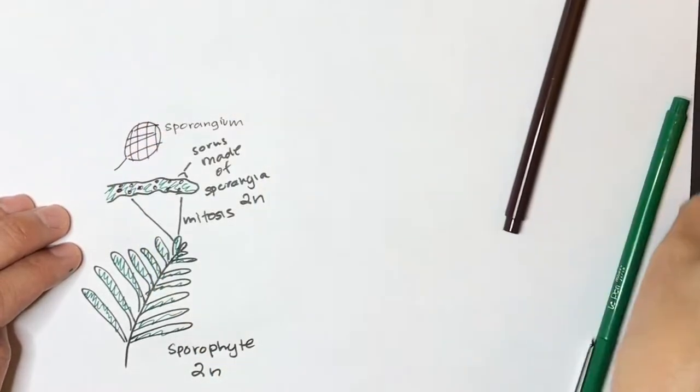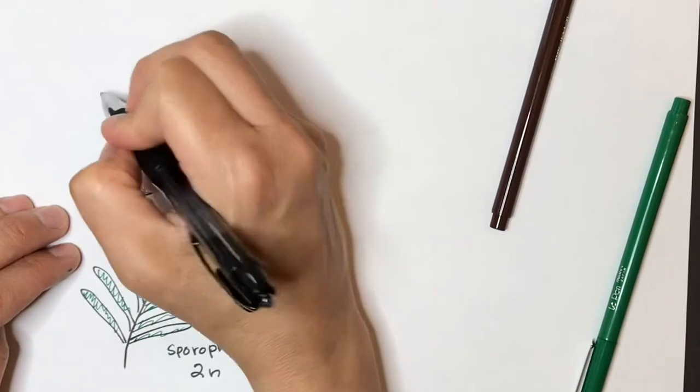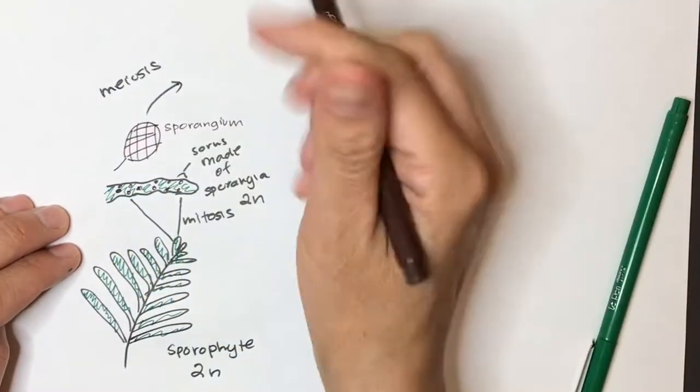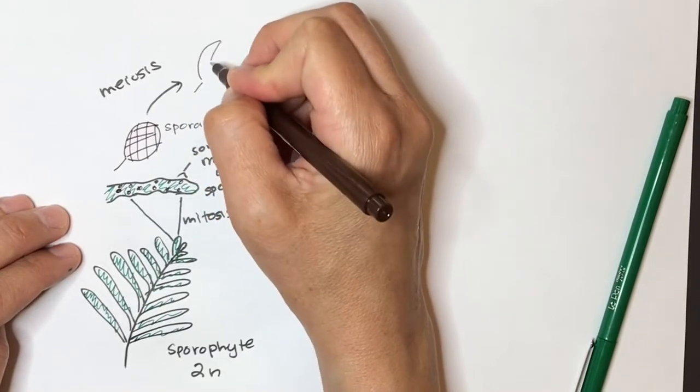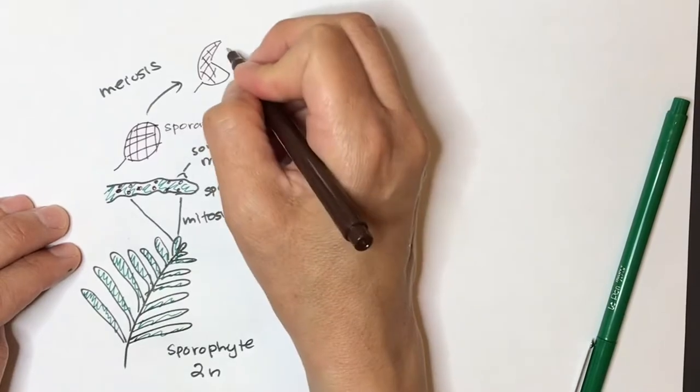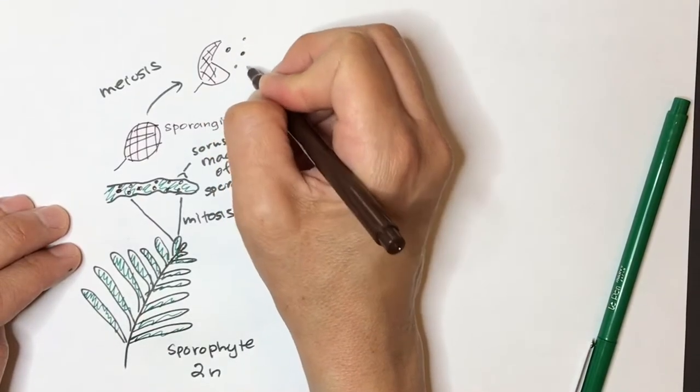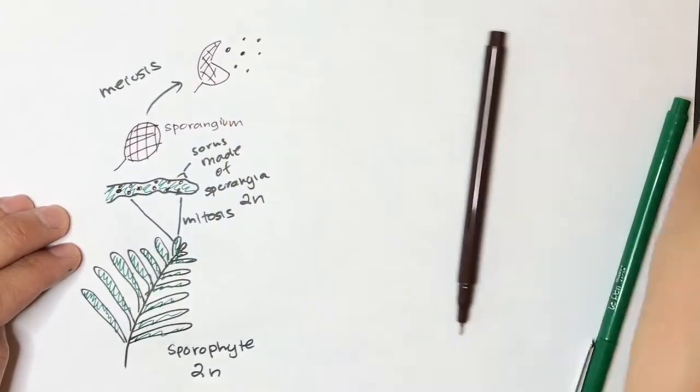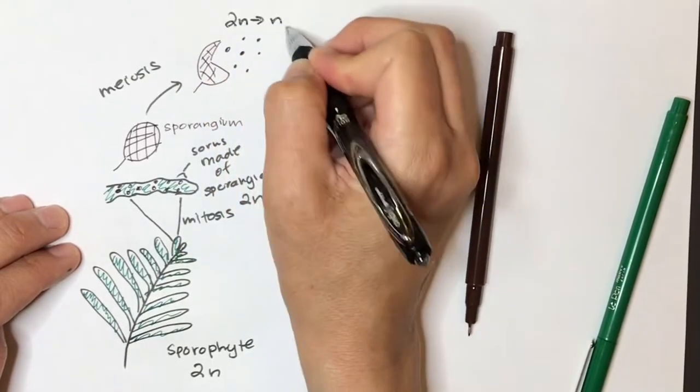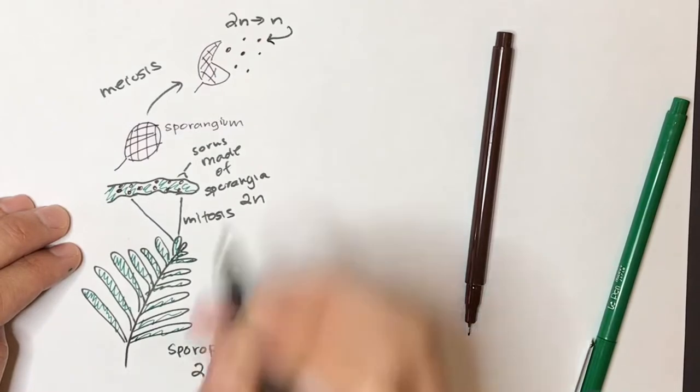So we get meiosis happening in here. And then it will break open to release the spores inside. So these spores, because of the product of meiosis, went from 2N to N. So these spores are all N. They're haploid.